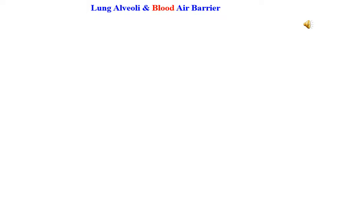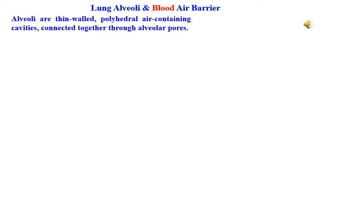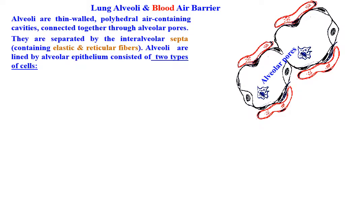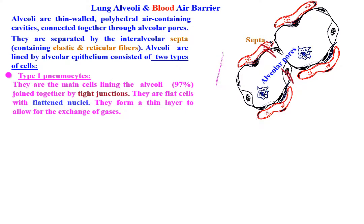Lung alveoli and the blood-air barrier. Alveoli are thin-walled, polyhedral, air-containing cavities connected together through the alveolar pores. They are separated by the inter-alveolar septa containing elastic and reticular fibers. Alveoli are lined by alveolar epithelium consisting of two types of cells. Type 1 pneumocytes are the main cells lining the alveoli — about 97% — joined together by tight junctions. They are flat cells with flattened nuclei.